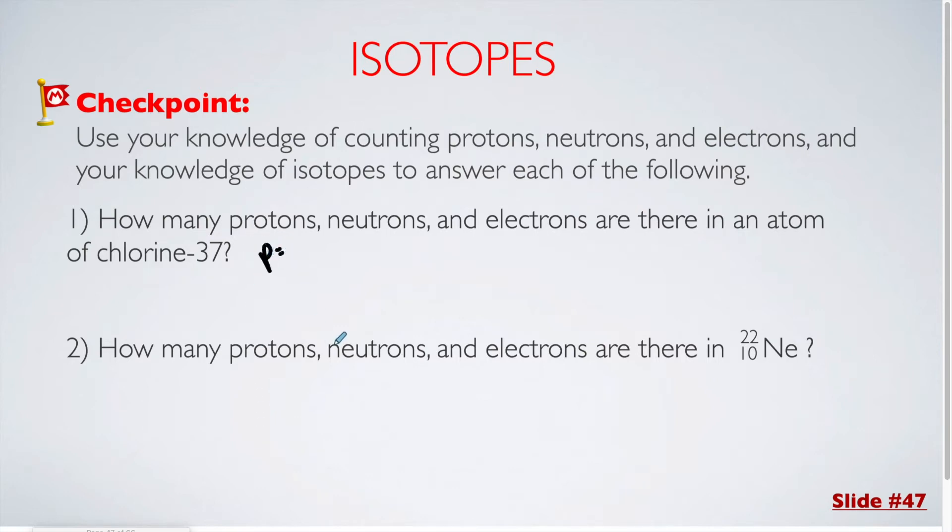The first thing you would need to do here is look at a periodic table unless you have the atomic number for chlorine memorized. Chlorine is atomic number 17, so that means you're going to have 17 protons. The hyphen notation shows you the mass number, so we have a total mass of 37 and 17 protons within that mass. If we subtract those two, we can see that we're going to have 20 neutrons.